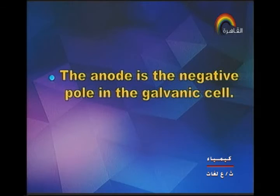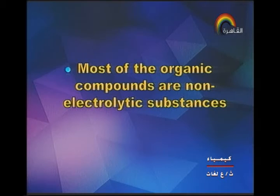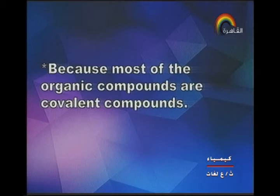Next point: the anode is the negative pole in the galvanic cell because at the anode the metal is oxidized, converting to positive ions and leaving electrons on the anode. Next point: most organic compounds are non-electrolytic substances because most organic compounds are covalent compounds.